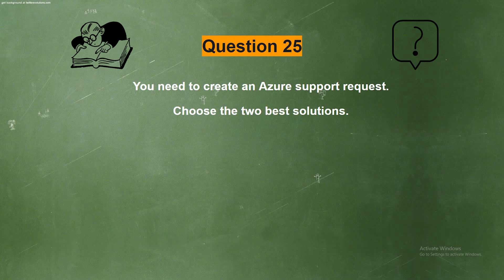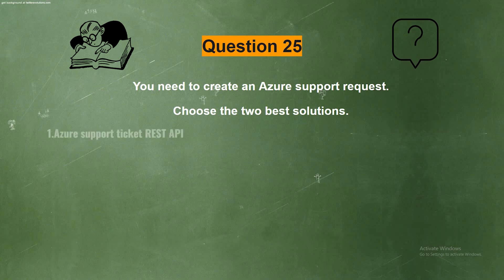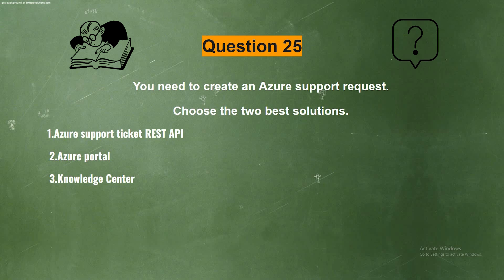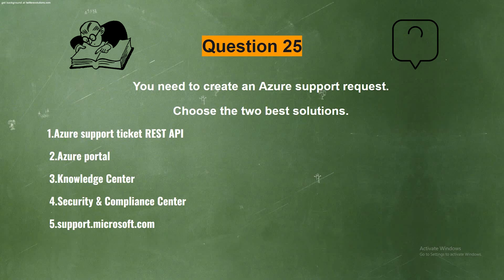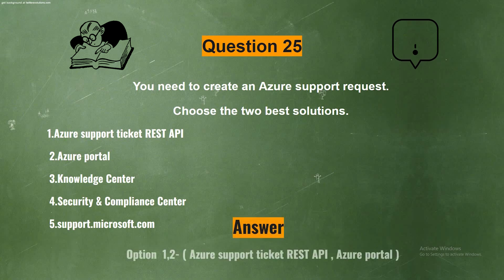Question 25. You need to create an Azure support request. Choose the two best solutions. The options are: Option 1, Azure Support Ticket REST API; Option 2, Azure Portal; Option 3, Knowledge Center; Option 4, Security and Compliance Center; Option 5, Support.Microsoft.com. The correct answers are Option 1, Azure Support Ticket REST API, and Option 2, Azure Portal.